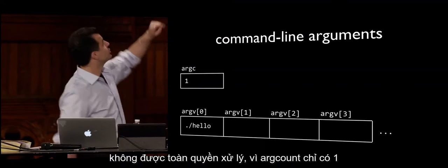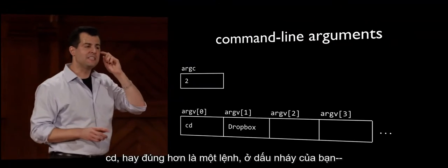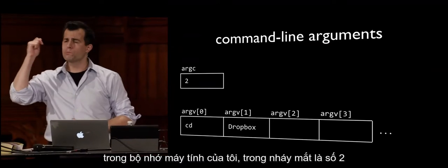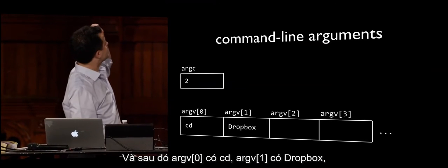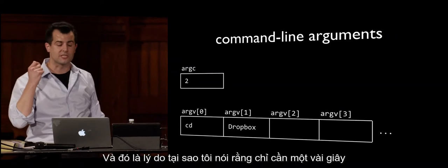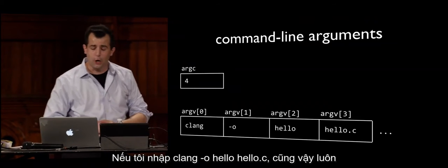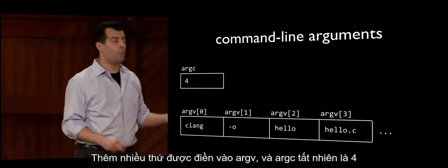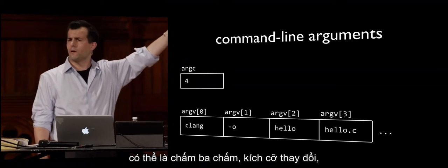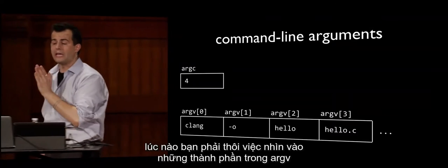If I run cd space dropbox, argc becomes 2, argv bracket zero has cd, argv bracket one has dropbox, and then the command completes and memory goes away. Similarly, make dir pset2 fills in different strings in argv. For clang dash o hello hello dot c, argc is 4 — so you always know where the end of the array is because argc tells you how many elements to look at.